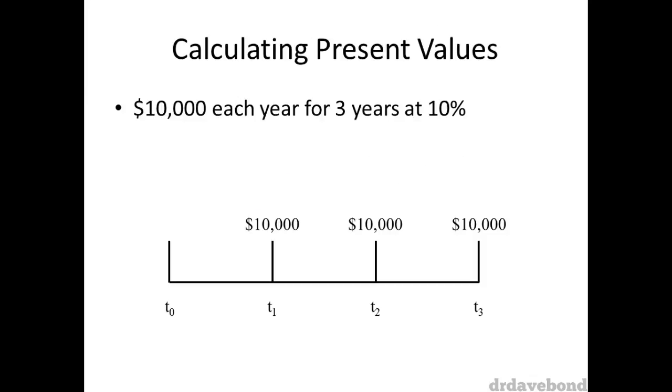So, instead of a one off payment in three years time of $10,000, we have a $10,000 payment at the end of each year for three years, all discounted at 10%. This gives us 1 minus 1.1 to the power of minus 3, all divided by 0.1.